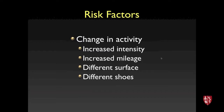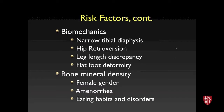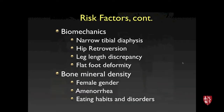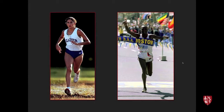Other risk factors include changes in running surface or shoes, and intrinsic factors like narrow tibia, retroverted hip, leg length discrepancy, or flat feet. In female athletes specifically, it's important to consider bone health, as many competitive athletes run to the point of becoming amenorrheic, which has implications for bone health.